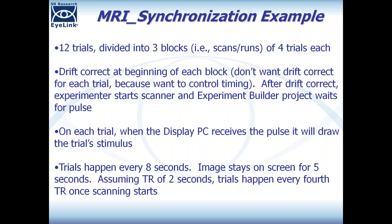In an MRI environment, we don't really want a drift correct or drift check between trials because that procedure waits for the participant or experimenter to press a key, adding variable timing. Since we want the MRI to control the timing of things in an MRI environment, throwing drift checks into the scan block adds unpredictability. So typically in an MRI setting, if we're going to do a drift check, we do it between blocks.